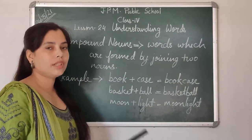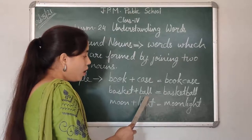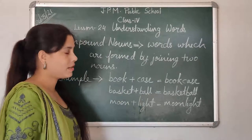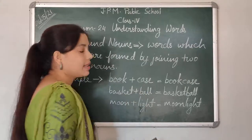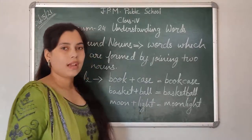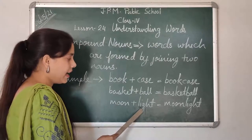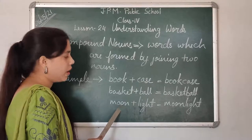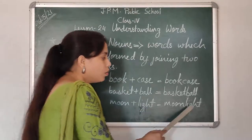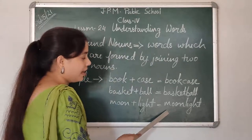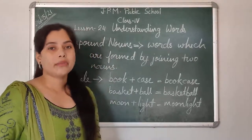What is bookcase? A case which is used for keeping books. Basket plus ball — if we join both these words, we will get basketball. It's a kind of game which is played by us. The third example is moon plus light. We all know that moon is a noun and light is also a noun. When we join both these nouns, we get the third noun which is called moonlight. Moonlight means the light which is coming from the moon.